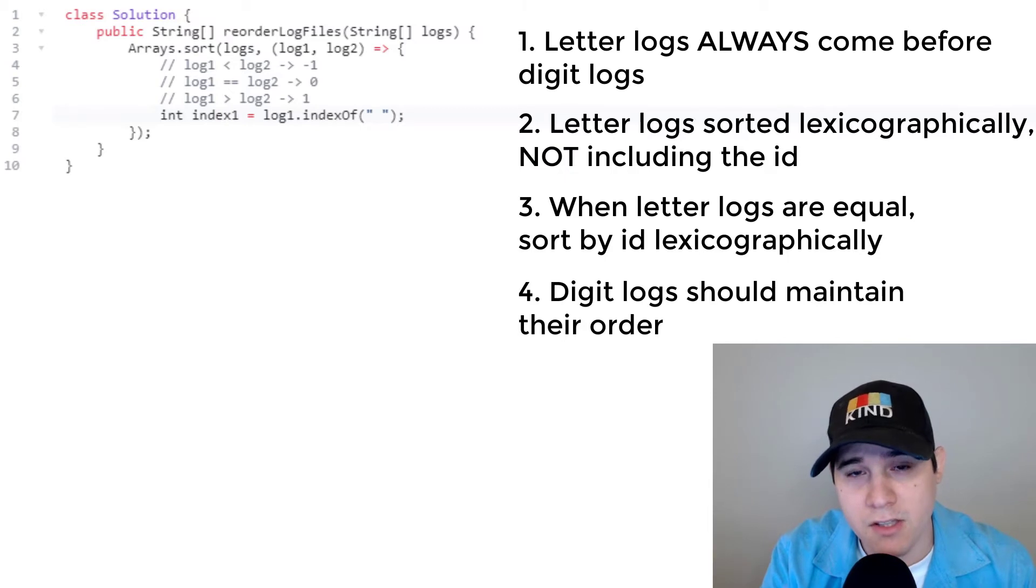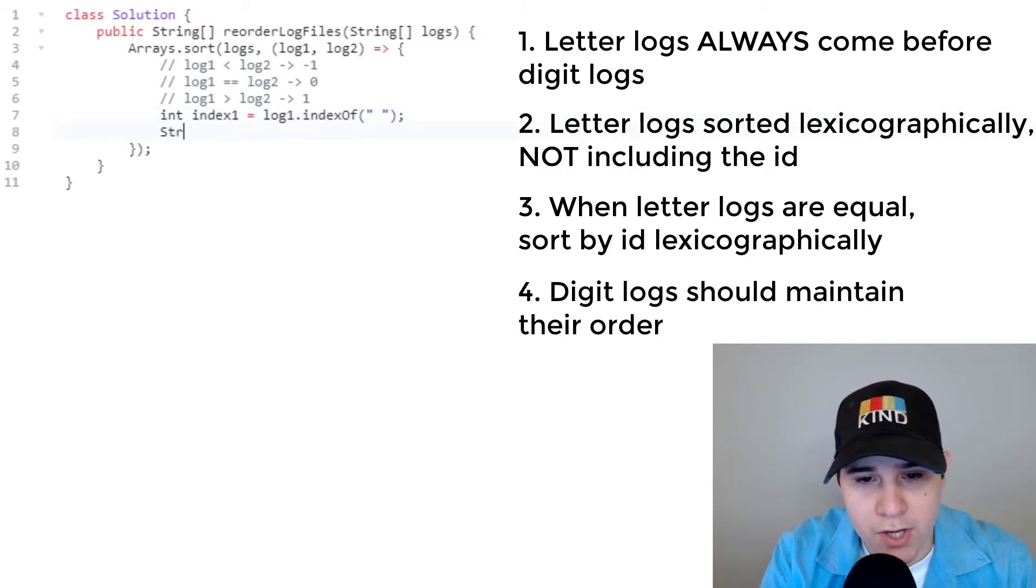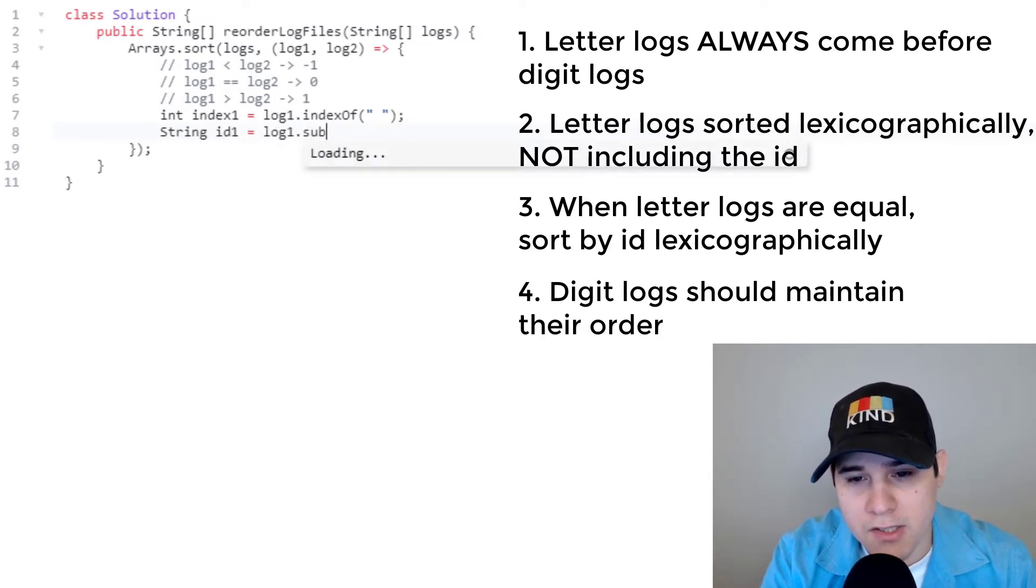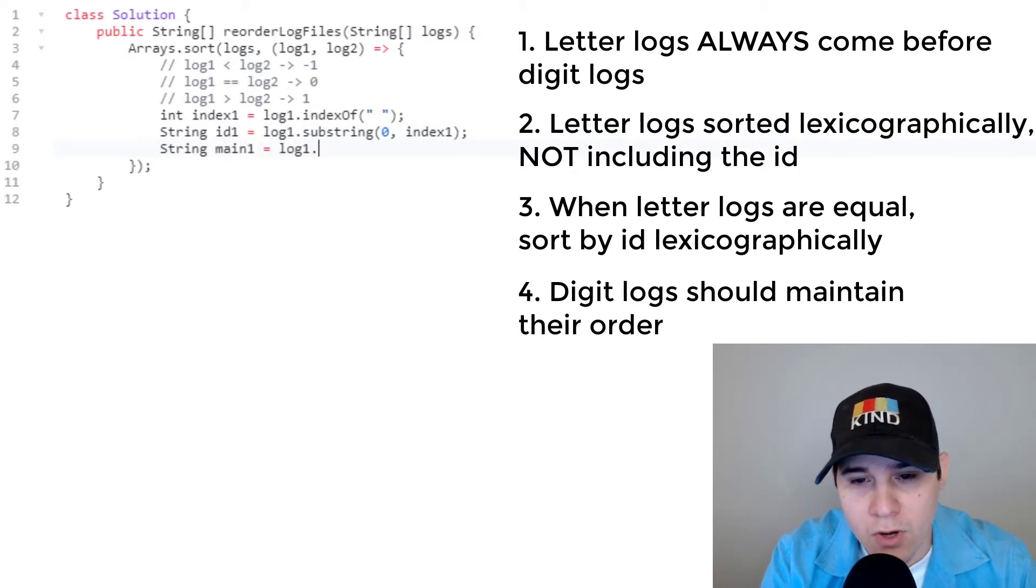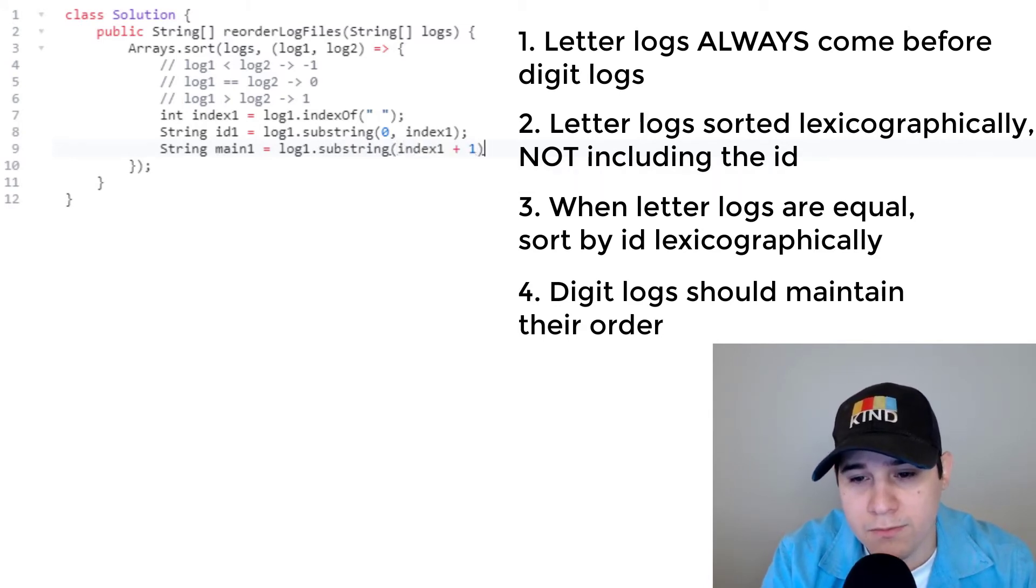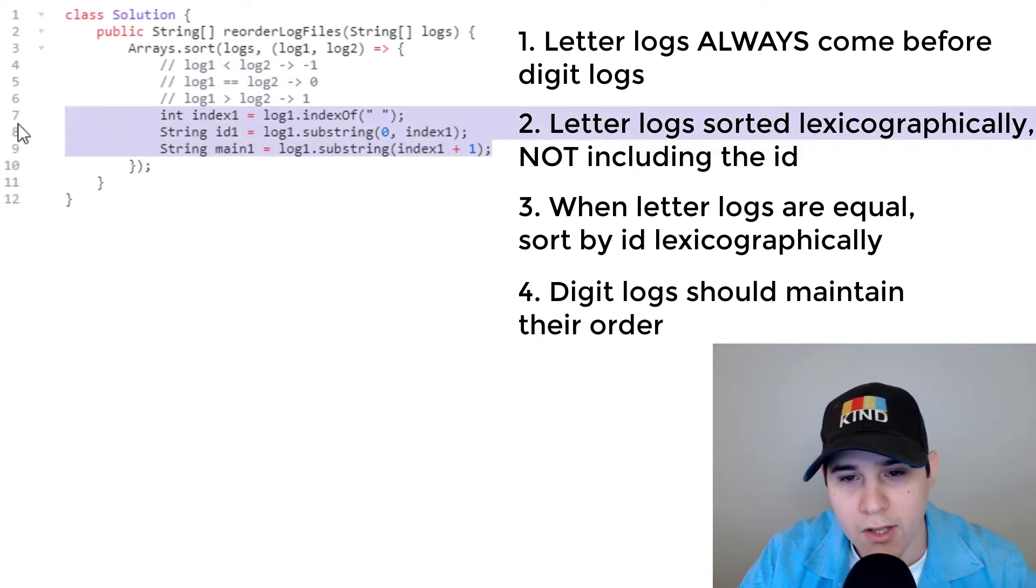And now we just need to compute the substring. So we can say string, we'll say ID one equals log one dot substring from zero up to index one. And then we can say string, we'll call this the main portion. So we'll call it main one log one dot substring from index one plus one. So this is splitting up the string based on the identifier and the log portion. And now we get to perform the same exact logic for log two.